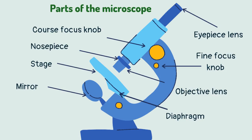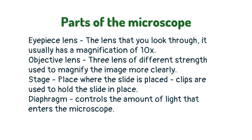Look carefully at the diagram to make sure that you can identify all the parts of a microscope. The main parts of a microscope and their functions are: eyepiece lens — the lens that you look through, it usually has a magnification of 10x. Objective lens — three lenses of different strength used to magnify the image more clearly.